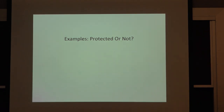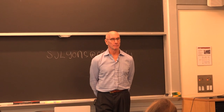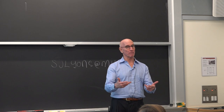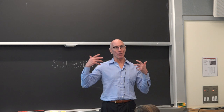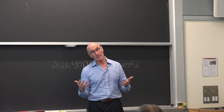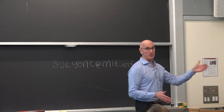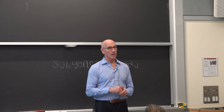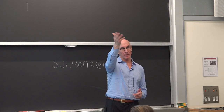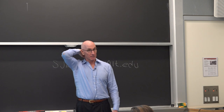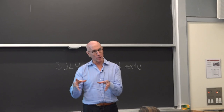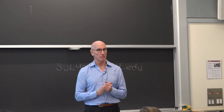Why are scientific discoveries not protectable in fixed or tangible form? It has to be an invention, not a discovery. A law of nature precedes most of us — it's hard to find the original inventor of gravity. You can copyright an explanation of a scientific principle — Newton's Principia is copyrightable — but the scientific principles he describes are not. The book is copyrightable, but the underlying science is not.